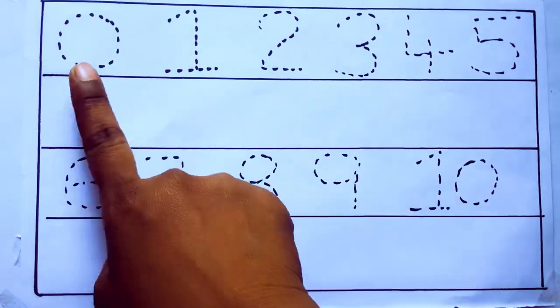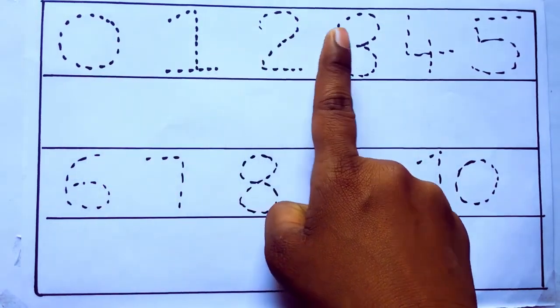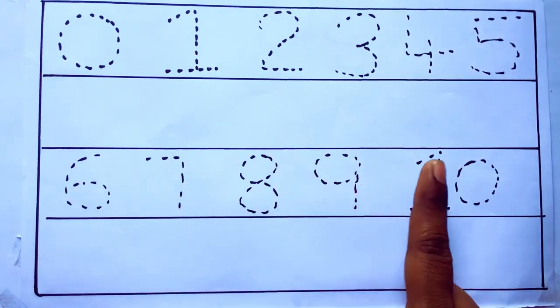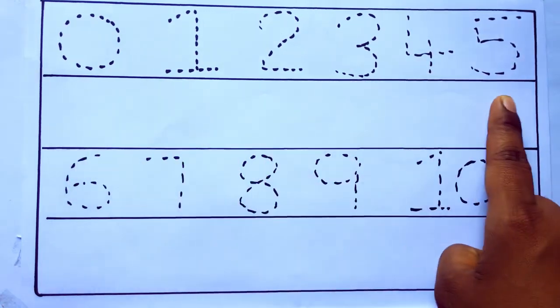0 to 10: 0, 1, 2, 3, 4, 5, 6, 7, 8, 9, 10 and rewriting the numbers.